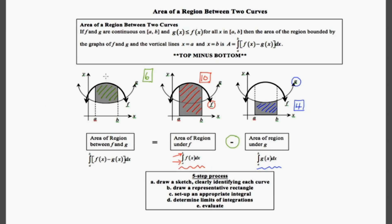So this curve f was the one that was on top. This curve g was the one that was on the bottom. And if we subtract one from the other, and we evaluate on the given interval, which is from a to b, we're going to get the area between the two curves.